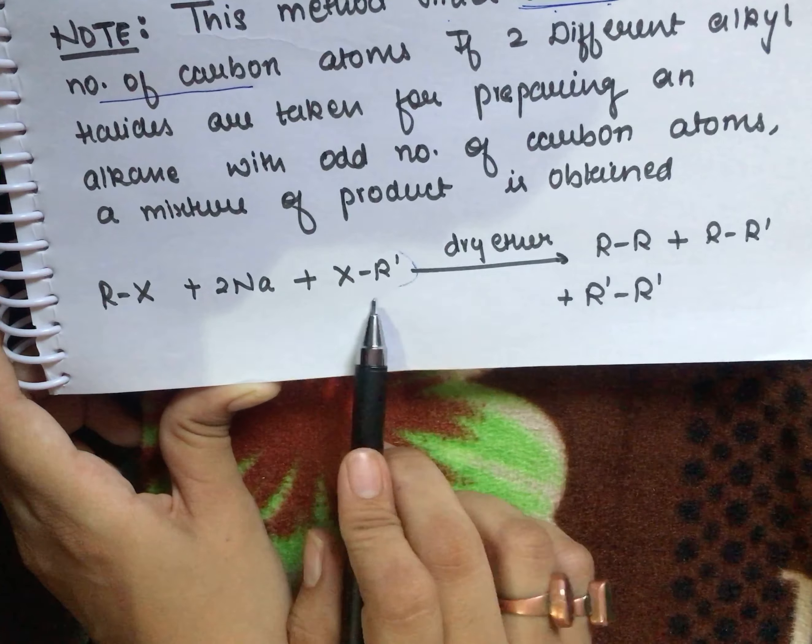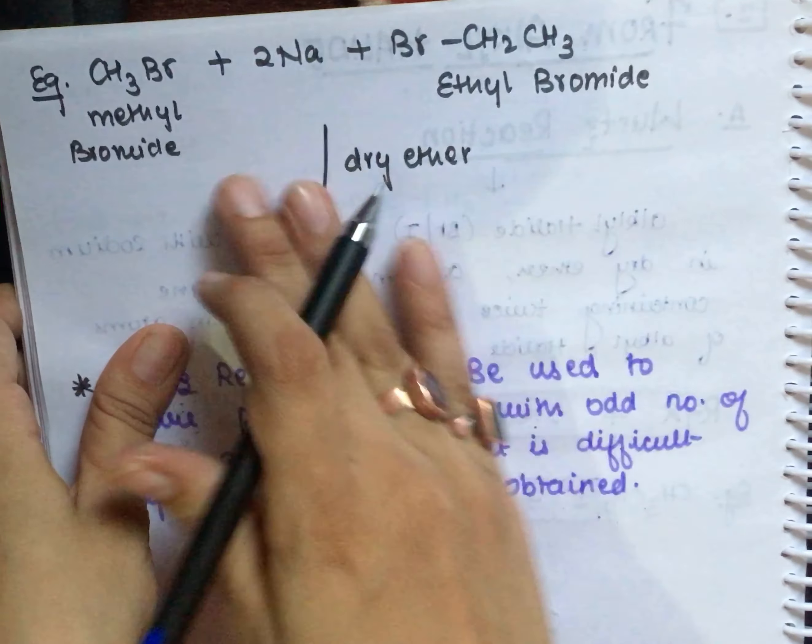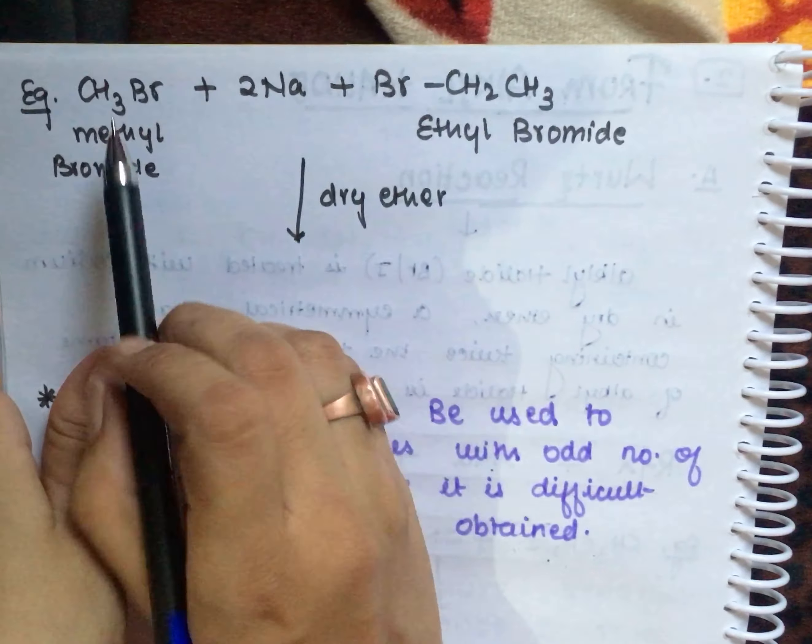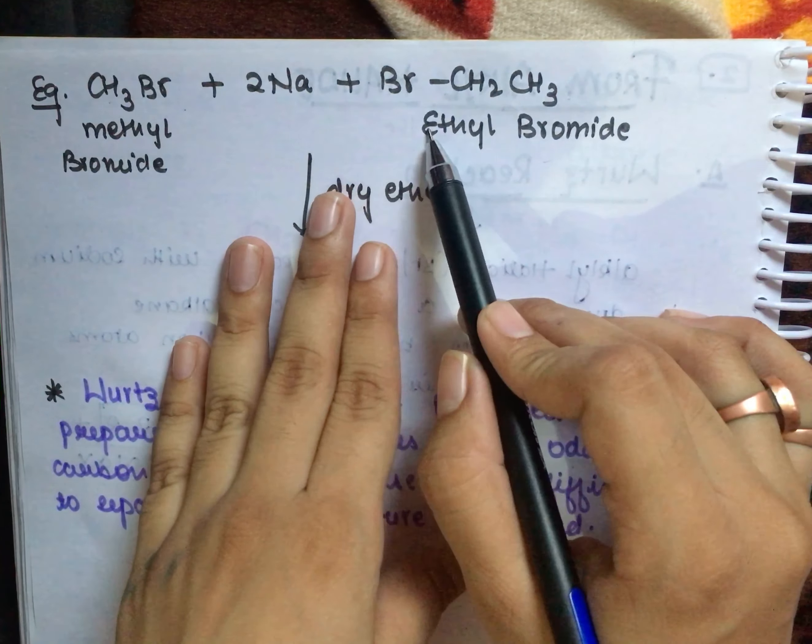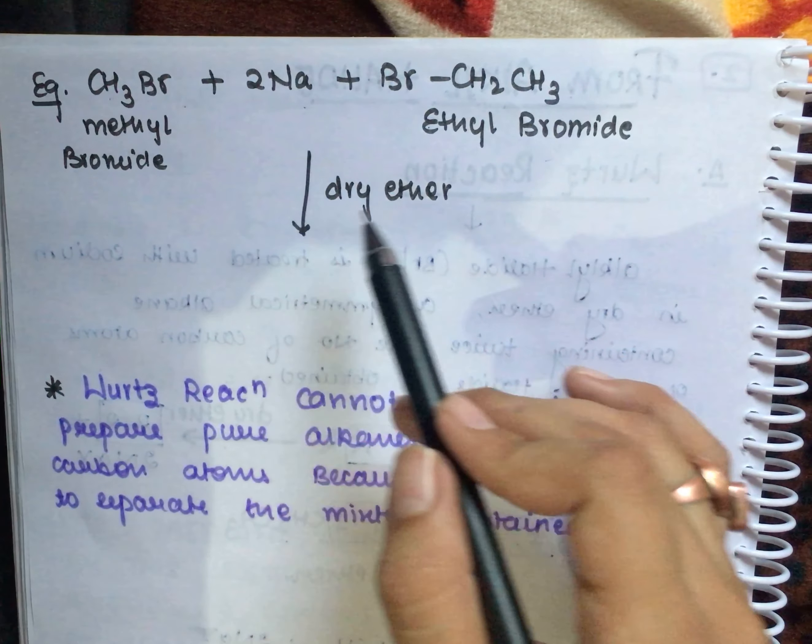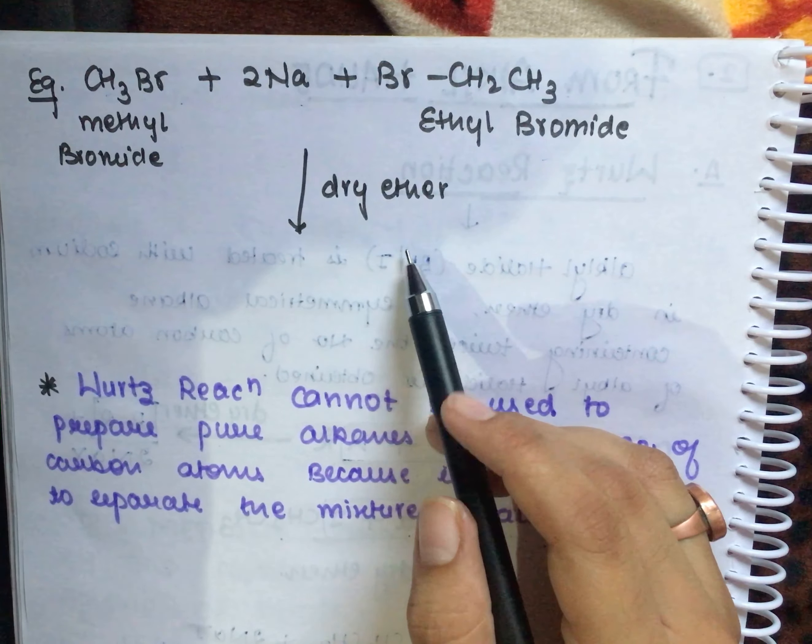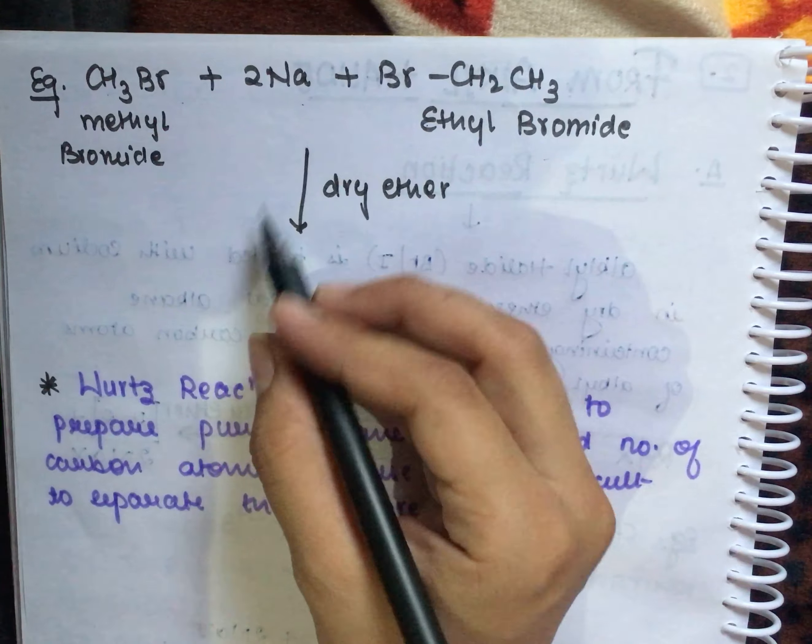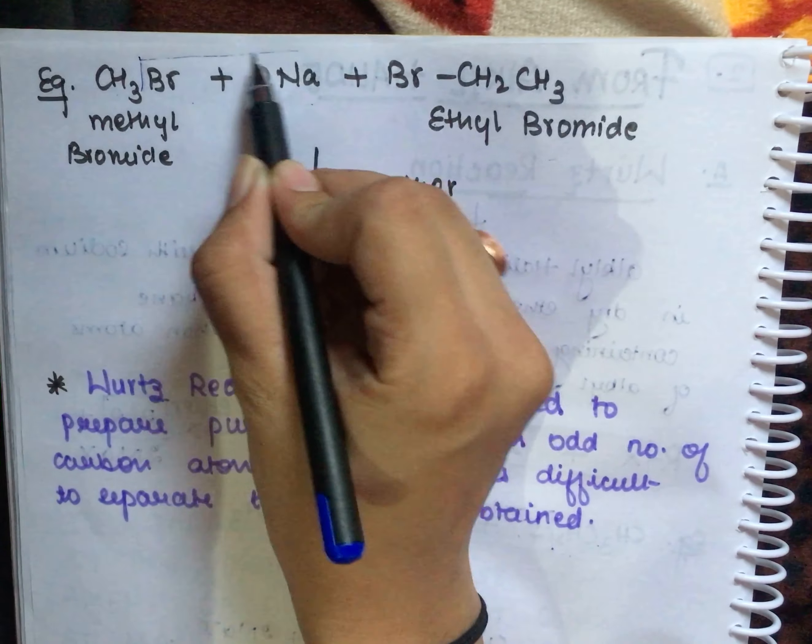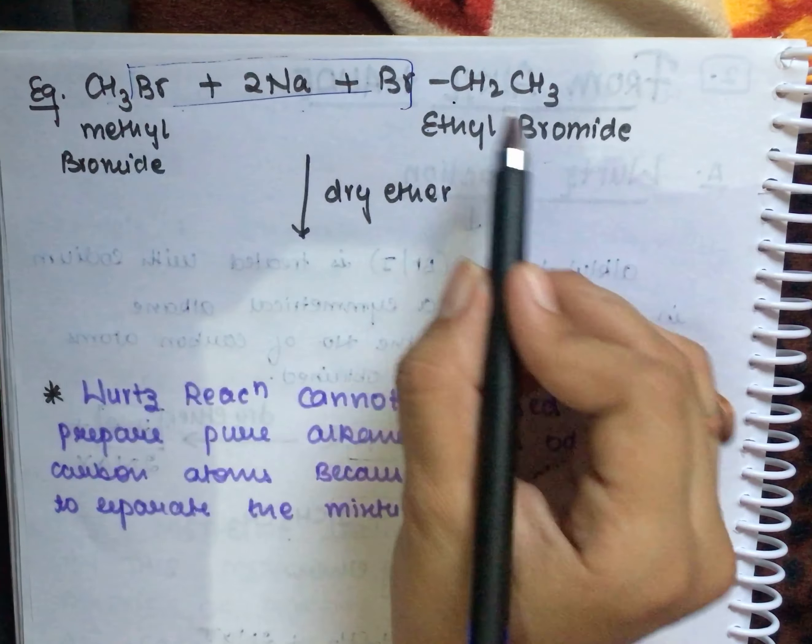For example, if we take CH3Br (methyl bromide) and react it with sodium metal in the presence of dry ether, we will get a different number of carbons. 2NaBr will come out, and what will remain is CH3CH2CH3.